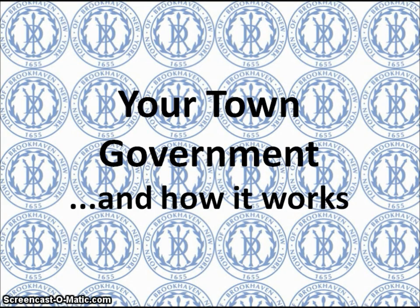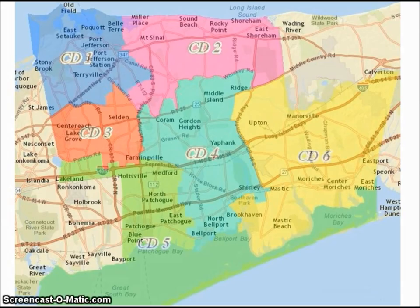Welcome to Your Town Government, which explains the basics about how Brookhaven Town in New York State is governed. The town is run by the Supervisor and the Town Council. There are six council districts: two on the North Shore, three on the South Shore, and one in the middle of the island.